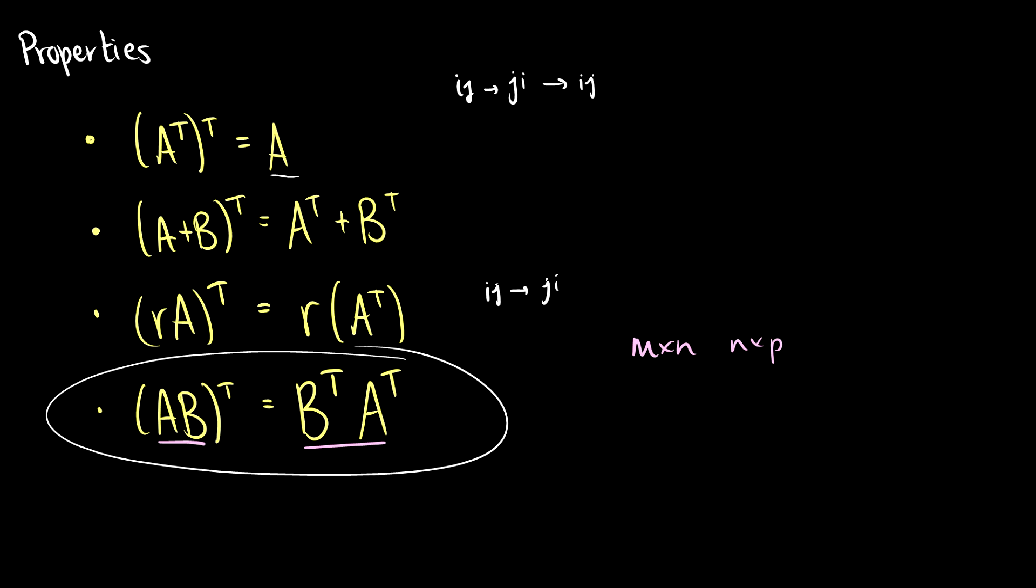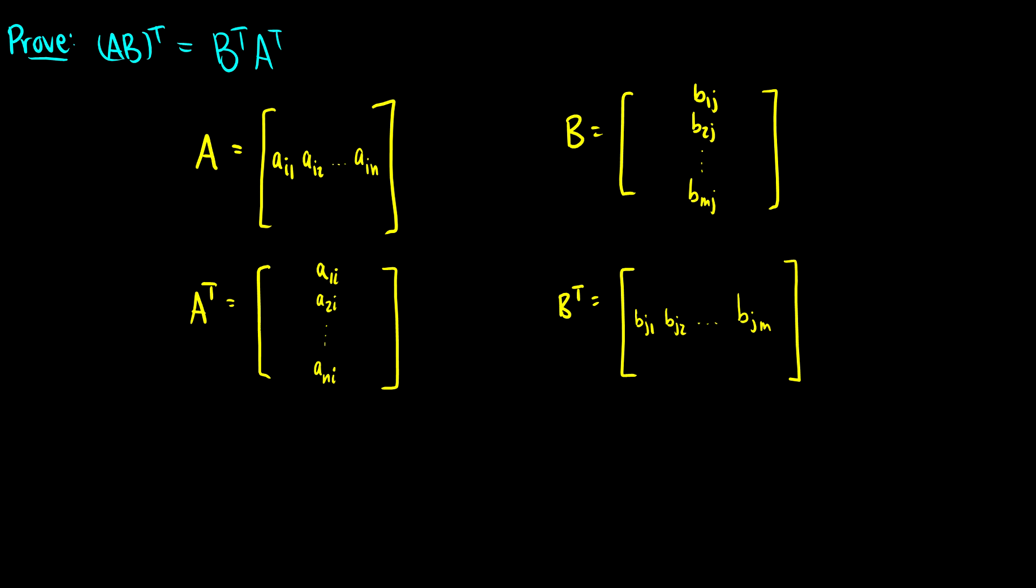So I've sort of pre-drawn out the proof. We're going to take specific rows in this case. So we're taking the ith row of A, the jth column of B, and then we're doing the transpose. And we're just going to show that if we take any arbitrary row,